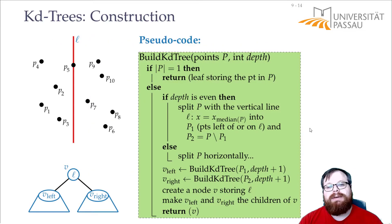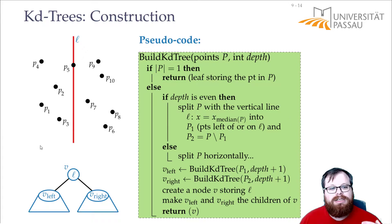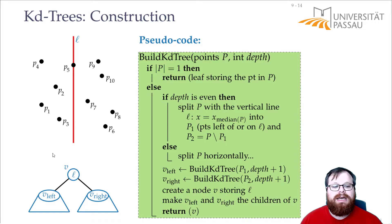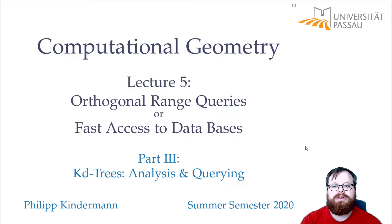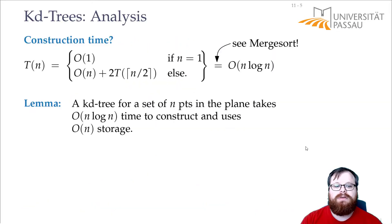It's the same as in one dimension. We have all our elements in the leaves, and the internal nodes are lines that split the space vertically or horizontally. We have n leaves, which gives us a binary search tree with at most n−1 internal nodes. So the space requirement is also O(n).